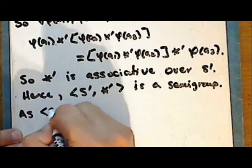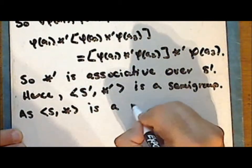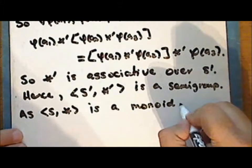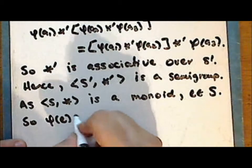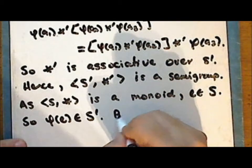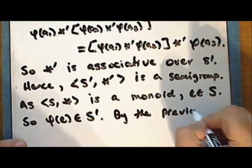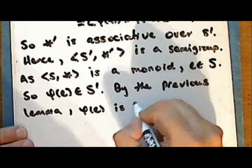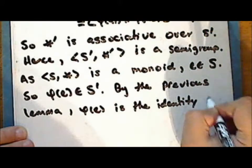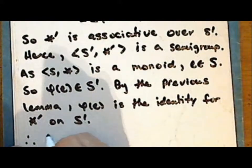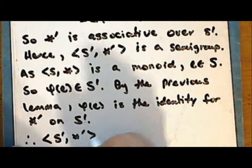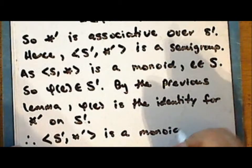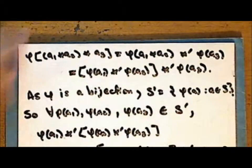As the structure S with star is a monoid, the identity element E is in S, so φ(E) is in S'. By the previous lemma, φ(E) is the identity for the operation star prime on S'. Therefore the structure S' with the operation star prime is a monoid. Next we will look at an example utilizing this lemma.